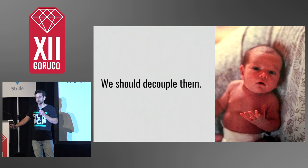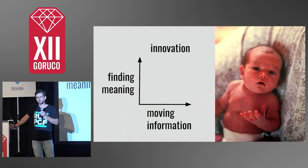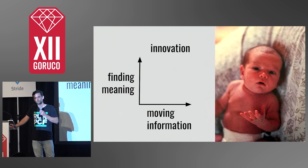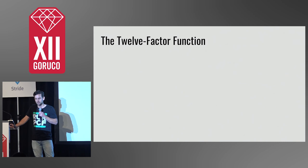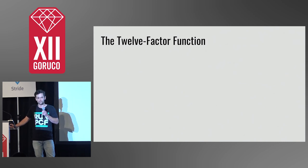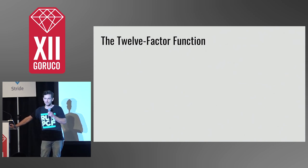And second of all, I can move faster along each of these important axes. So that brings us back to the 12-factor function. Instead of talking about business and infrastructure, we'll talk about meaning and magic.